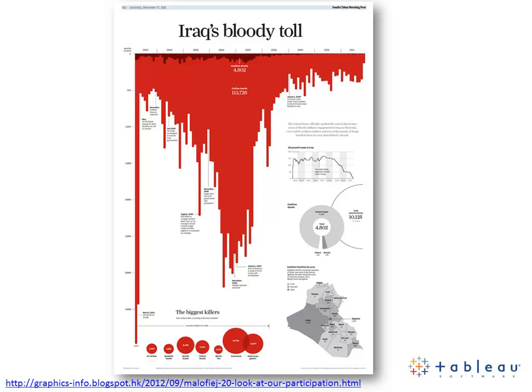The way a visualisation is designed will convey a particular message. The same data can often be displayed in multiple ways to create different messages. All of those messages should be trusted, but in the same way you might trust an opinion piece in a newspaper.